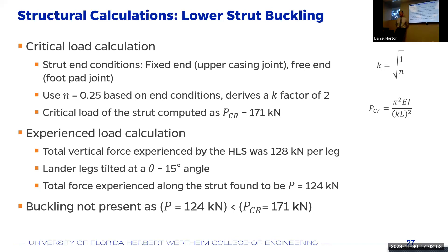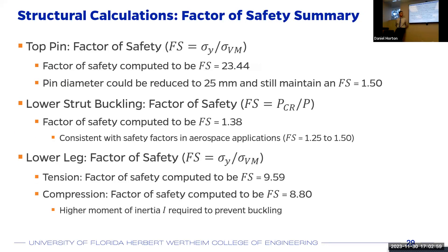When asked about the high factors of safety of 8 or 9 in the lower leg, the team explained that 10-2-3 titanium has a very high yield strength, so the stresses experienced in that part of the leg are much lower than the material's allowable. However, titanium is still required because it is the elastic modulus — and thus the moment of inertia — that constrains the design against buckling, where the factor of safety is only 1.38. The buckling constraint was the most critical design factor found after conducting all structural calculations.